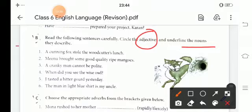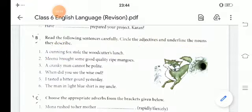A cunning fox stole the woodcutter's lunch. See, fox is a noun and what is his character? He is cunning. So, cunning will be circled because it is adjective of the fox and woodcutter's lunch. It is a noun.